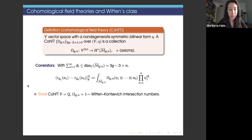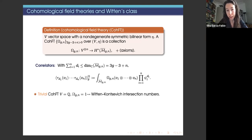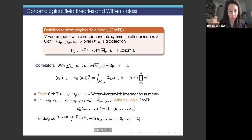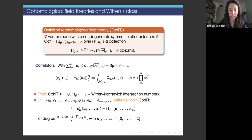The trivial CohFT takes V equal to Q with all classes being one, recovering Witten-Kontsevich intersection numbers. A less trivial example is Witten's R-spin cohomological field theory, in which the vector space has dimension r minus one. Witten constructed the class for genus zero, but for higher genus the construction is quite complicated.